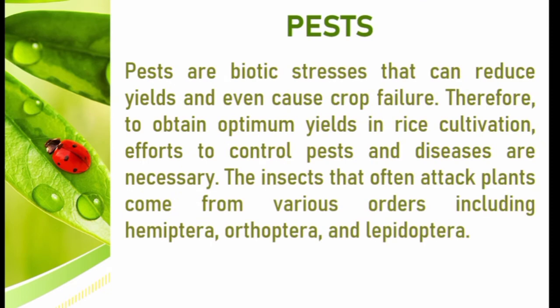Plants have a very important role for the life of other living things, especially humans and animals. If the plant is disturbed so that there is growth inhibition which causes damage or death, all forms of life in the world will be disturbed. Efforts to control plant pests have been developed through improved cultivation techniques, use of resistant crops, and use of biocontrol agents such as antagonists, parasitoids, and predators.